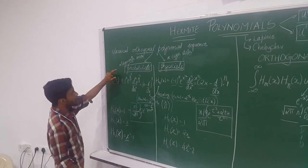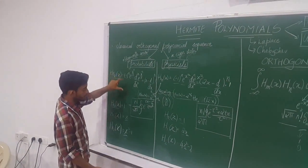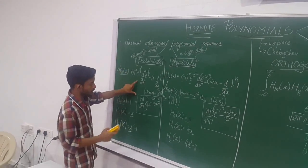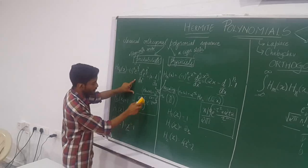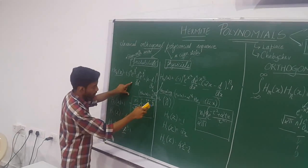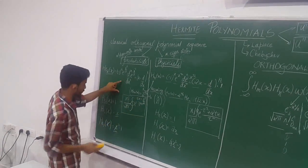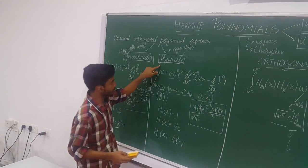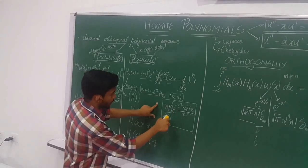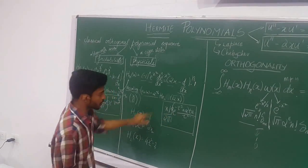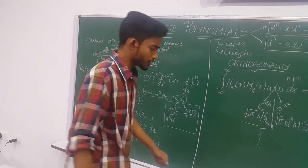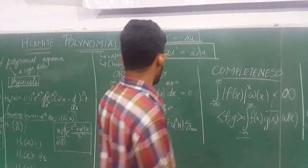Also, probabilistic Hermite polynomials can be written as n! / (2πi) × integral of e^(tx - t²/2) / t^(n+1). And physicist Hermite polynomials can be written as n! / (2πi) × integral of e^(-t² + 2tz) / t^(n+1).